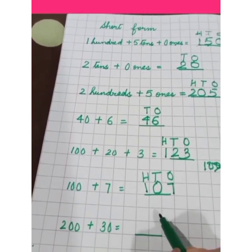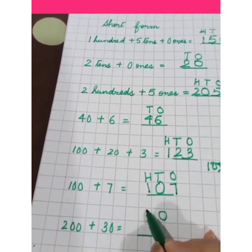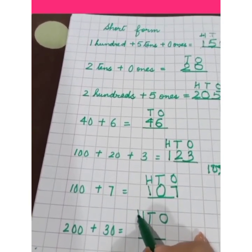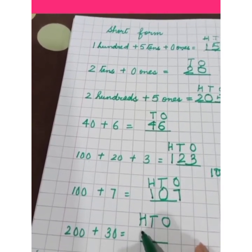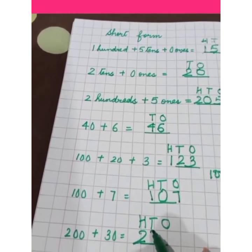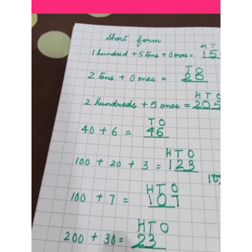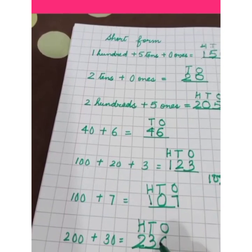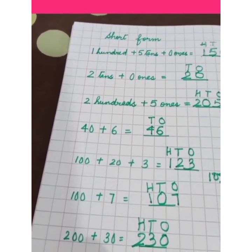200, again there should be 3 columns, ones, tens and hundreds. 200, 2 in the place of 100. 30 is 3 tens, 3 in the place of tens. Ones, there is no ones, so 0 in the place of ones, 230. So did you understand how to write in short form?